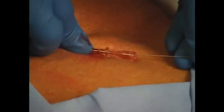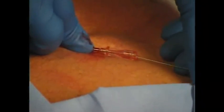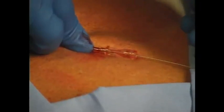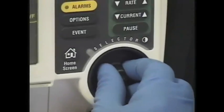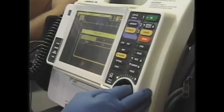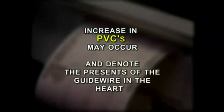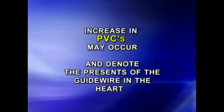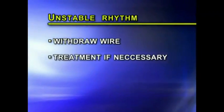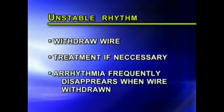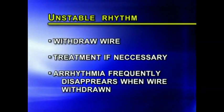After successful cannulation of the vein, the guide wire is then advanced through the needle into the vein. Cardiac monitoring with an audible EKG tone is essential to note the development of any arrhythmia. An increase in PVCs may occur and denote the presence of the guide wire in the heart. If an unstable rhythm should develop, the wire should be immediately withdrawn and treatment instituted if necessary, although the arrhythmia frequently disappears when the wire is withdrawn.